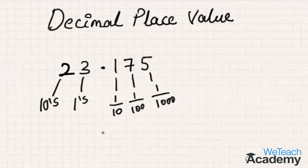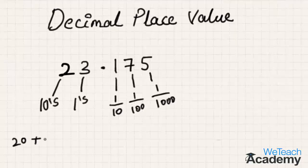The expanded form for this decimal number can be written as: 2, which is in tens place, becomes 2 × 10 = 20. 3, which is in units place, becomes 3 × 1 = 3. Coming to the decimal part, 1 which is in the 1/10th place becomes 1/10.